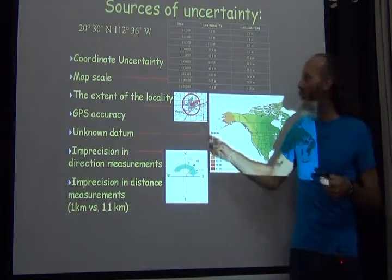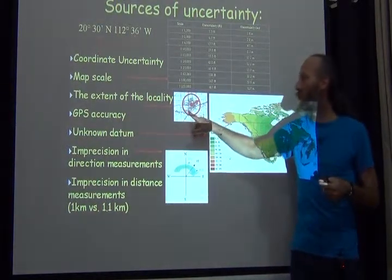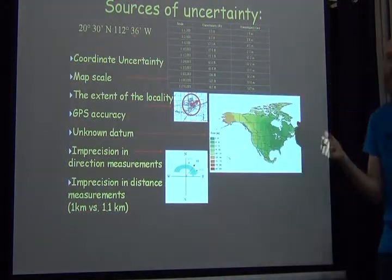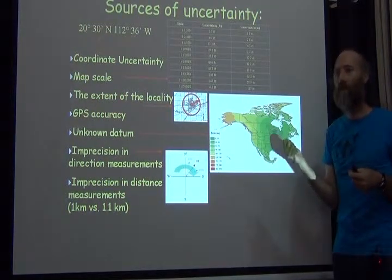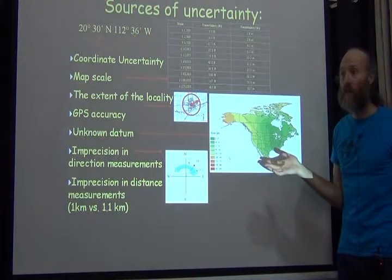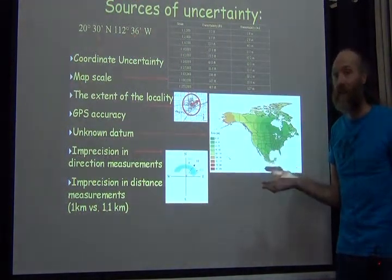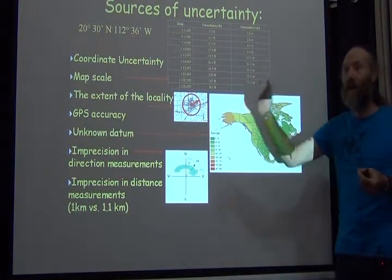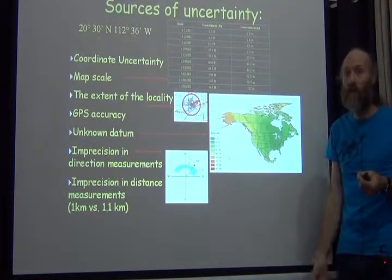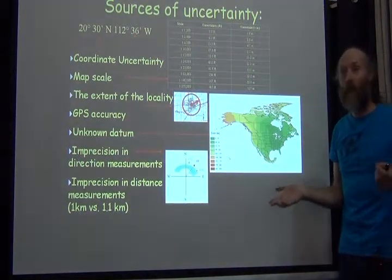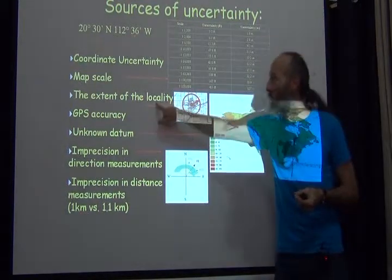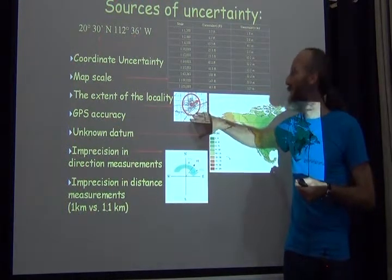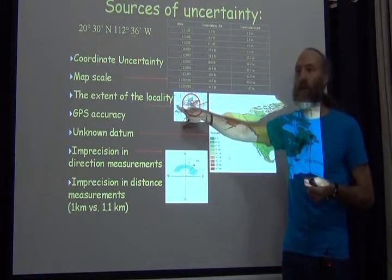Next, and often the most important contribution to the total uncertainty, is the extent of the named place inside the description. In our example, 'five miles north of Davis,' Davis is a fairly sizable town. We don't know where in Davis the collector is referring to — it might be the post office, the center of town, or the edge of town where he left on the road. Any part of Davis is possible, which means the extent of Davis contributes greatly to the uncertainty. For any locality based on a town, this is almost always the biggest contribution.